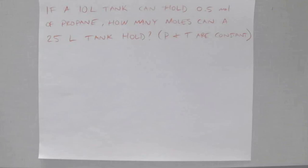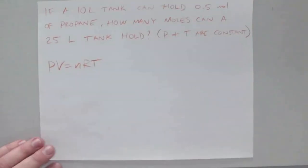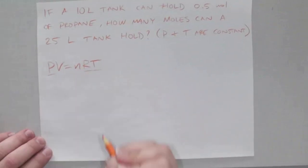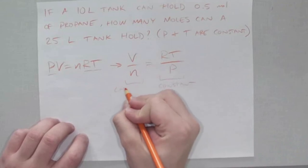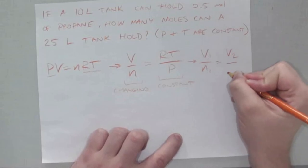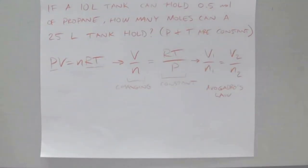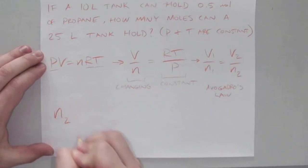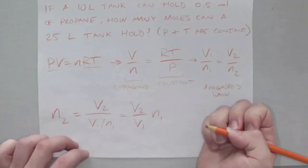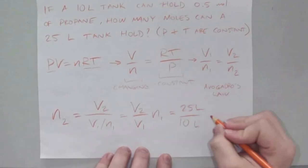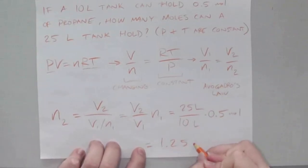We have one more example of changing gas properties. A 10-liter tank holds half a mole of propane. How many moles can a larger tank of 25 liters hold? Both pressure and temperature are held constant. With P, T, and R constant, rearranging PIVNERT gives V/N = RT/P, so V1/N1 = V2/N2 — this is Avogadro's Law. Solving for N2: (V2/V1) × N1 = (25/10) × 0.5 mol = 1.25 moles in the larger tank.